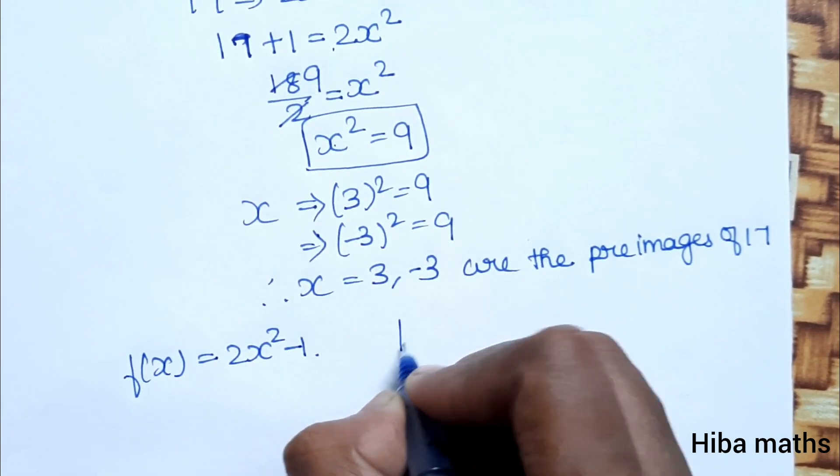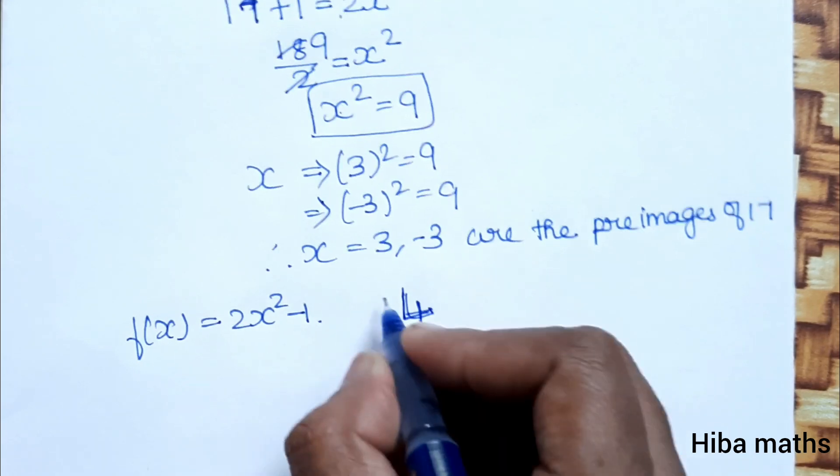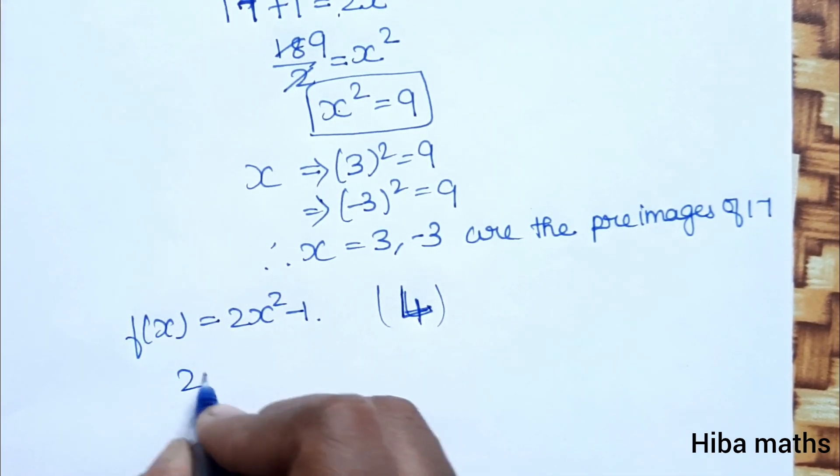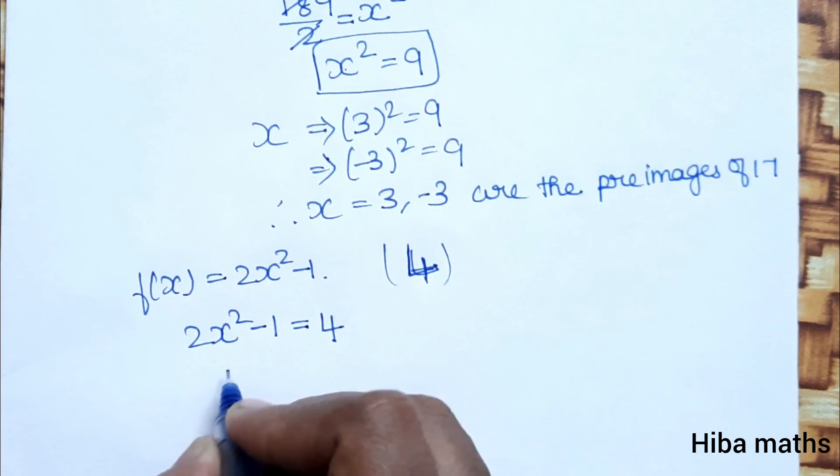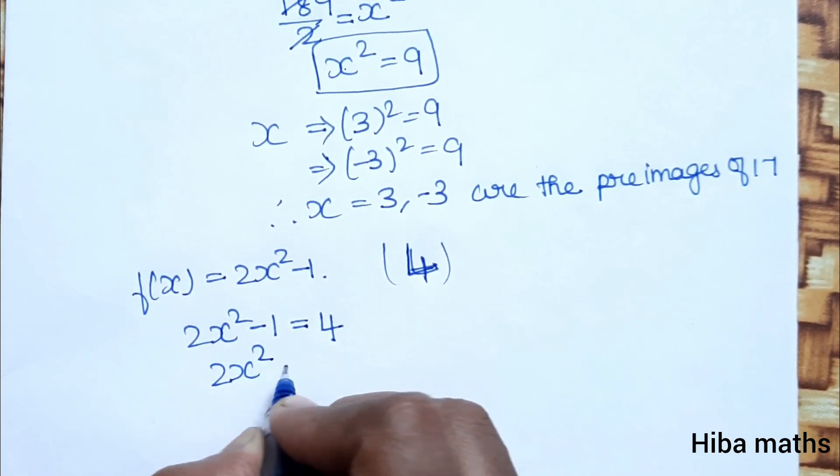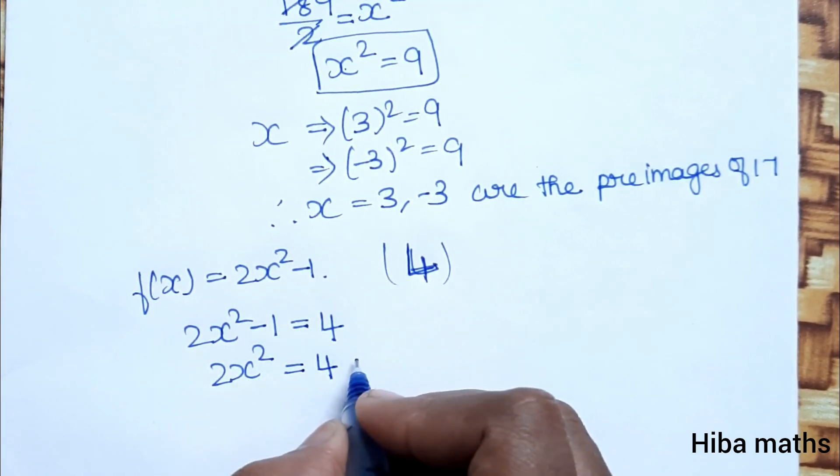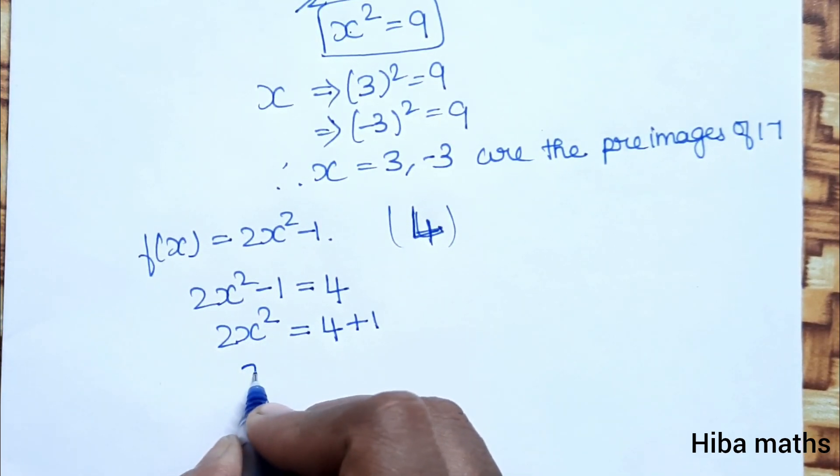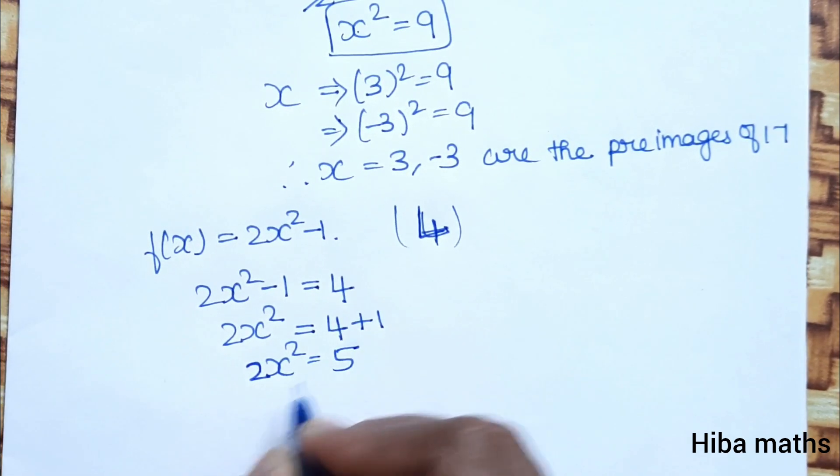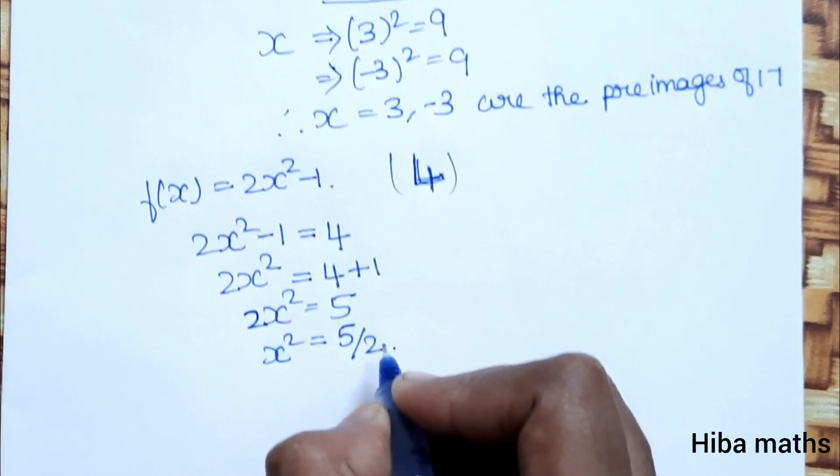For the preimage of 4: 2x squared minus 1 equals 4. Adding 1 to both sides, 2x squared equals 5. Therefore x squared equals 5 by 2.